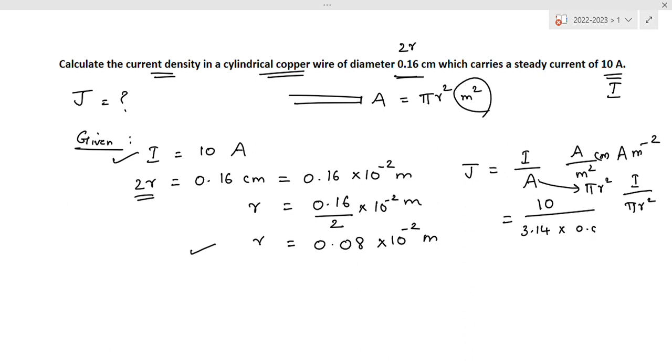0.08 into 10, this is 10 power minus 2, whole square as minus 4. We substitute 10 divided by 3.14 into 0.08 into 10 power minus 4.